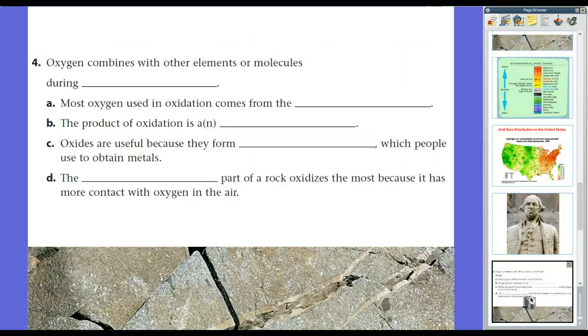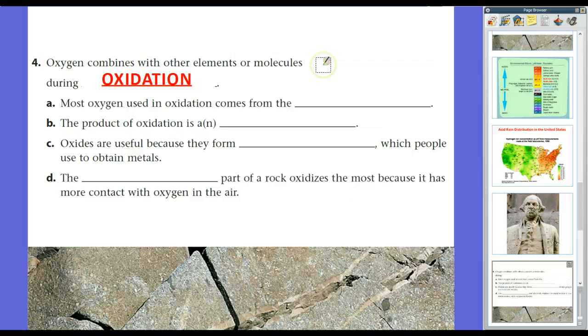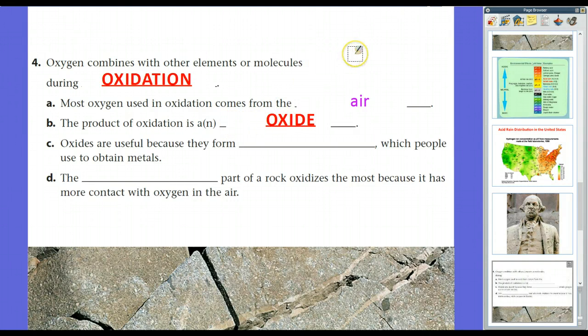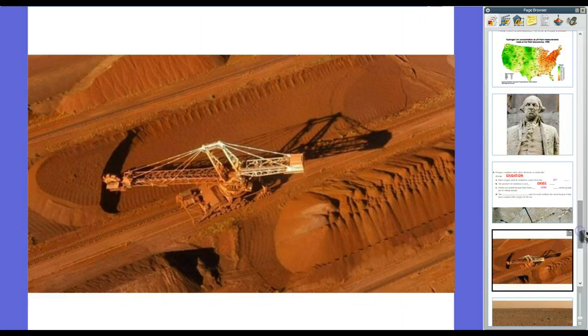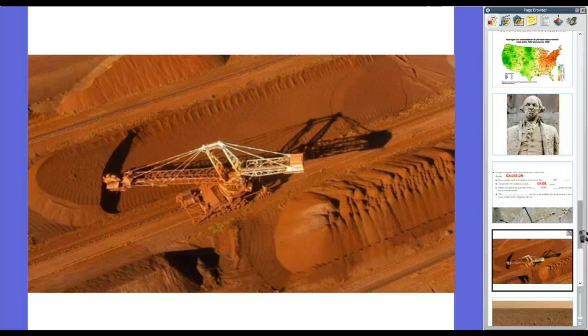So we have water. We have acids, and then we have oxygen. Oxygen is the other way that chemical changes can happen in rocks and soil. The process of oxygen combining with other elements is what we call oxidation. The most popular form of oxidation that we think of is actually rust, where iron combines with oxygen and it forms rust. Now, most oxygen used in the oxidation process comes from the air. And any product of an oxidation is an oxide, the combining of oxygen with something else. It's carbon dioxide. Carbon dioxide is an oxide because it's oxygen combining with another element.